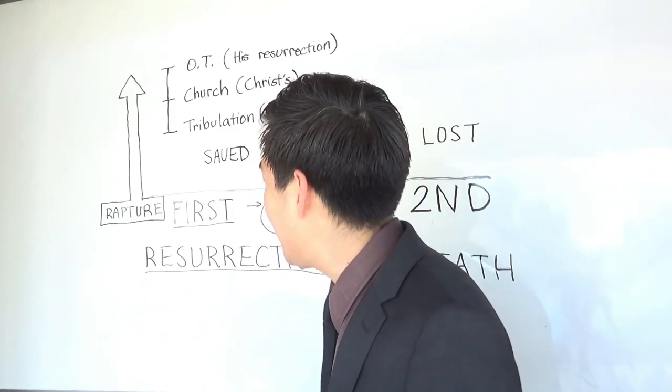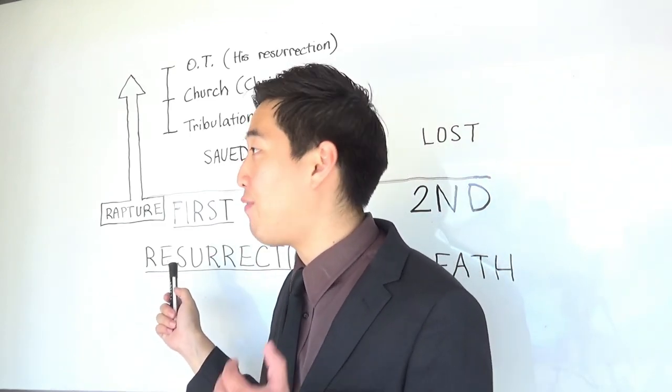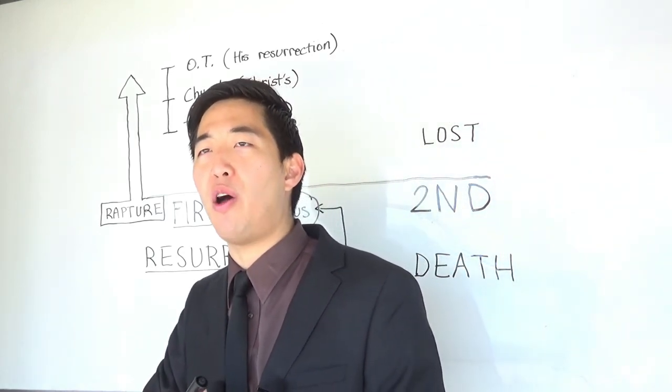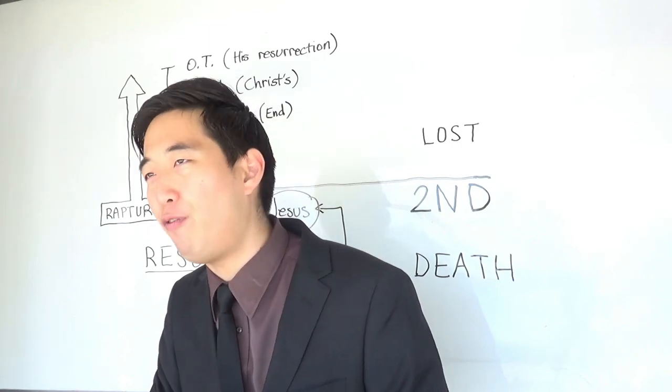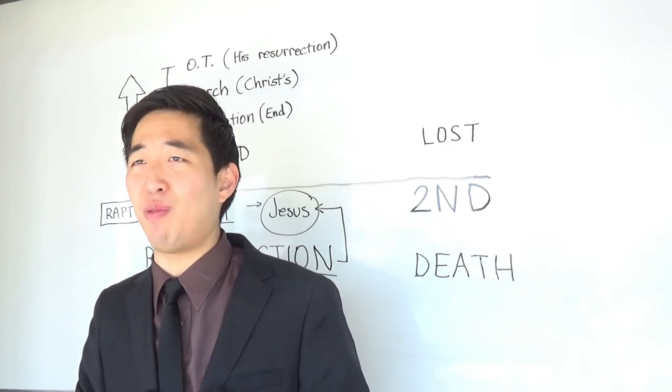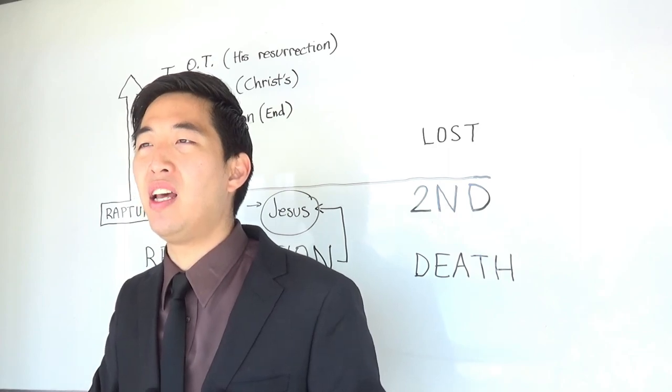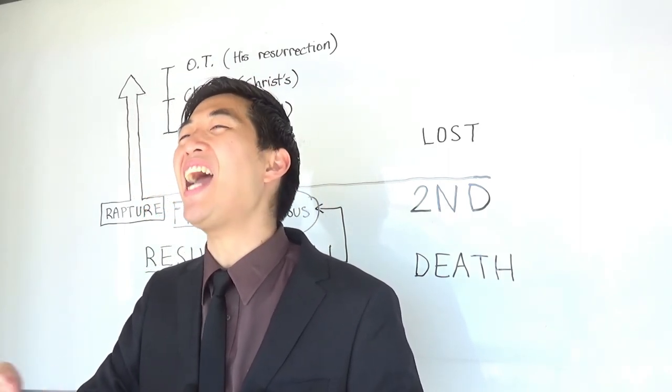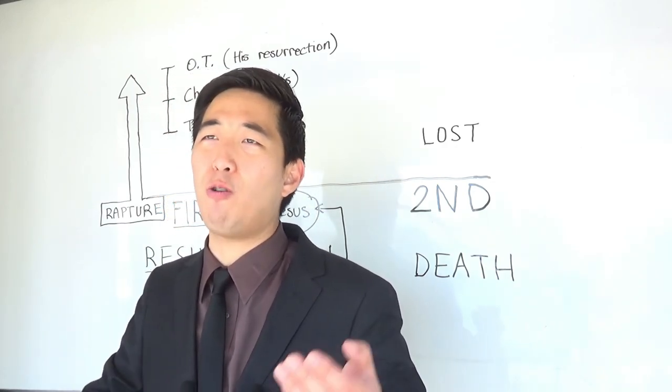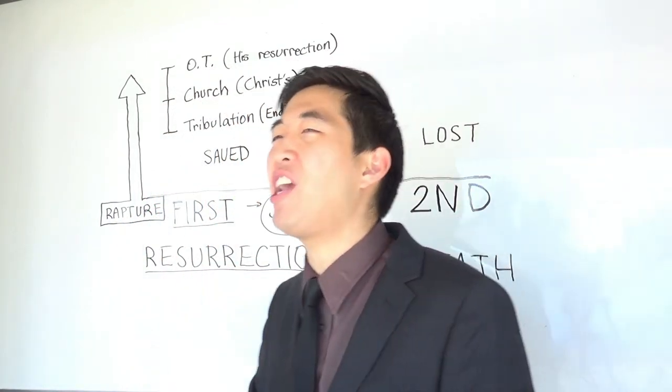But even if we go by their argument, a simple answer is this. Obviously, there were many resurrections before this, even if there is no church rapture. Excluding the church rapture, you can't neglect Jesus Christ raised himself from the dead. All the bodies Jesus himself had raised from the dead. The Old Testament saints at Matthew 27, they raised from the dead, unless they deny that too. Elijah resurrected somebody from the dead. And a soldier touching Elisha's body resurrected from the dead. I mean, Lazarus raised himself from the dead, so there were too many resurrections. So then what is the author saying first resurrection? It's very apparent.